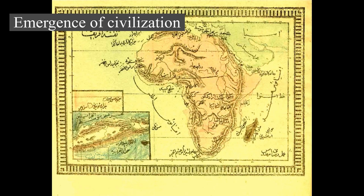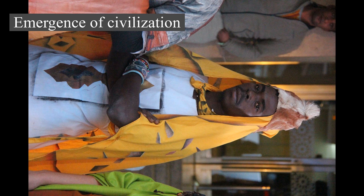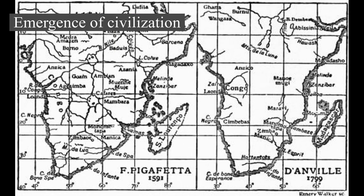By the first millennium BC, ironworking had been introduced in northern Africa. Around that time, it also became established in parts of sub-Saharan Africa, either through independent invention or diffusion from the north. By 500 BC, metalworking began to become commonplace in West Africa. Ironworking was fully established by roughly 500 BC in many areas of East and West Africa, although other regions didn't begin ironworking until the early centuries AD.